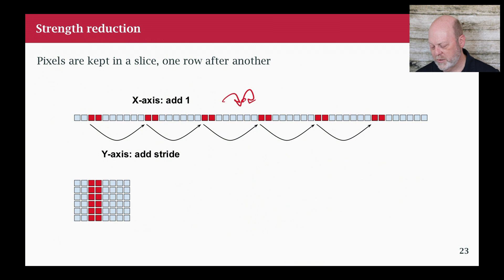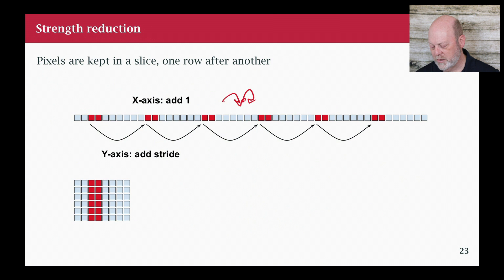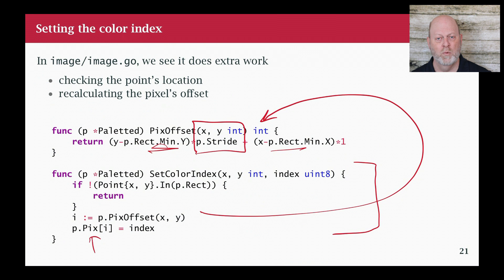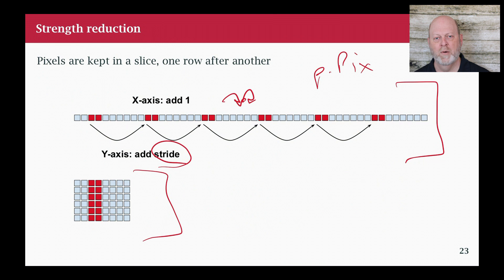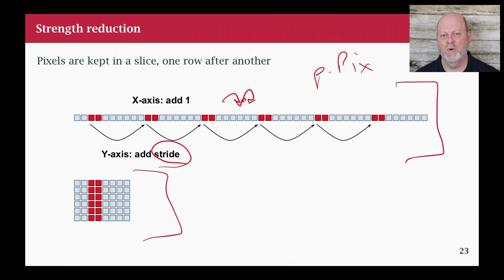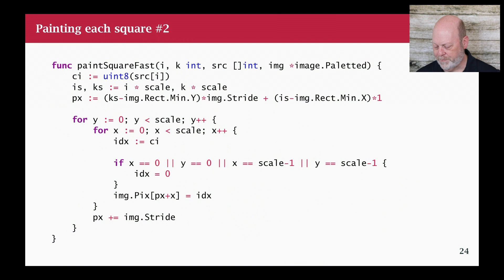Here's what we can do in the fast version: eliminate the unnecessary check, do some of the multiplication outside of the loop, and use a technique called strength reduction — the multiplication inside the loop gets turned into additions. That works because of how the pixels are laid out. The paletted image keeps all pixels in one big slice, row after row. Moving in the x direction is moving over one element; moving in the y direction uses stride, which is just the width of the row. So we find the upper-left pixel of the square with one multiplication, then navigate by addition.